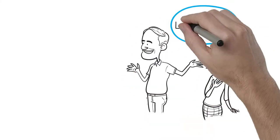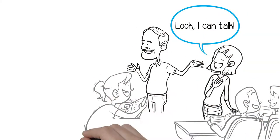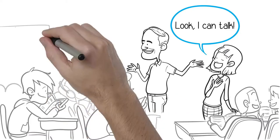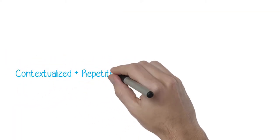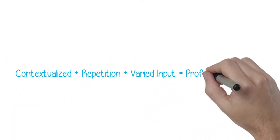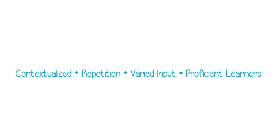Our main goal in classrooms is to utilize comprehensible input in order to help our students become proficient in understanding, reading, writing, and eventually speaking their new language. We believe that the main factor in the development of proficiency is contextualized, repetitive, and varied comprehensible input that keeps learners' interest.